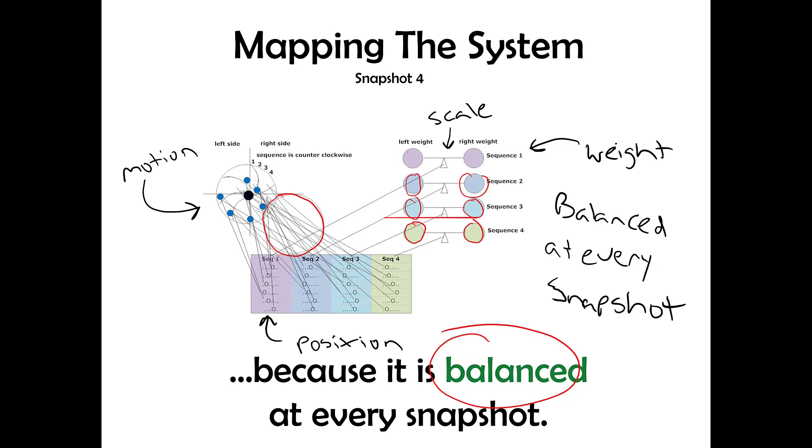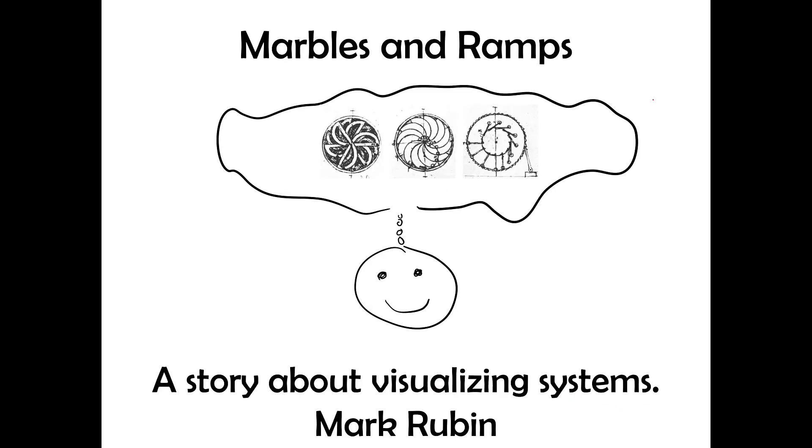It's always in balance, so that means you could spin it with your finger, but it would eventually stop because of the frictional effects inside the system. And that's a story about visualizing systems.